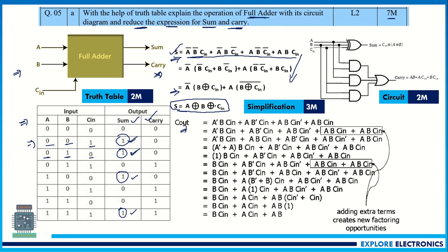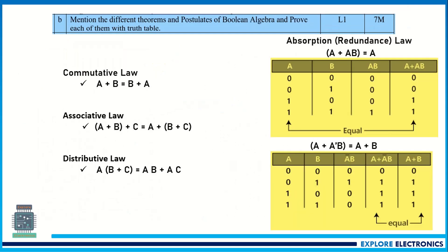For C_out, by looking at the 1s in the truth table we derive the expression, then reduce it to B·C_in + A·C_in + A·B. The truth table carries two marks, the simplification carries three to four marks, and the circuit diagram carries one or two marks. Remember, you need to draw the circuit diagram for the final simplified expressions after simplification.